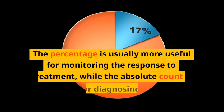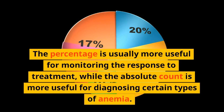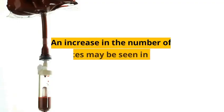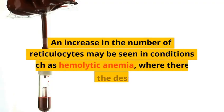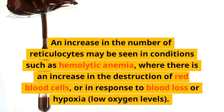The percentage is usually more useful for monitoring the response to treatment, while the absolute count is more useful for diagnosing certain types of anemia. An increase in the number of reticulocytes may be seen in conditions such as hemolytic anemia, where there is an increase in the destruction of red blood cells.